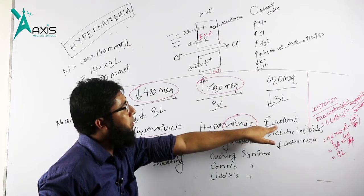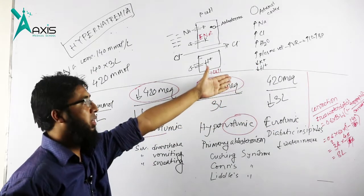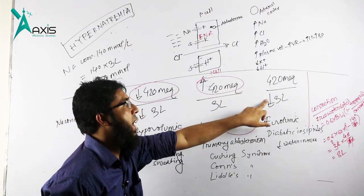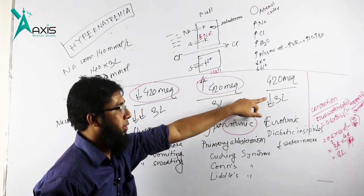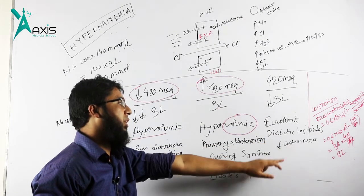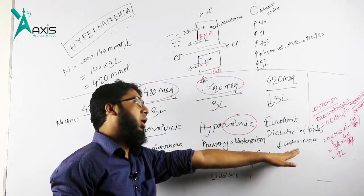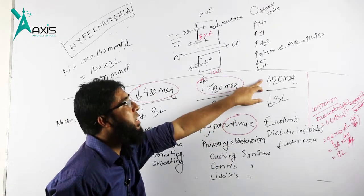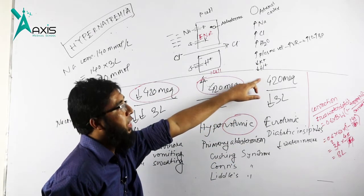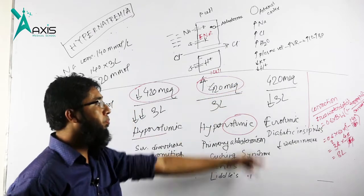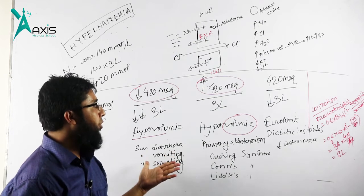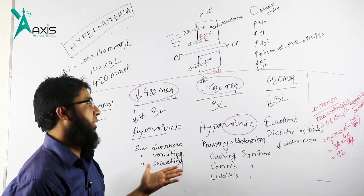Next is euvolemic hypernatremia. Euvolemic hypernatremia means sodium volume is normal, but there is absolute loss of water. Like in diabetes insipidus, decreased water intake. Plasma volume decreases, so there is hemoconcentration. Hemoconcentration means sodium increases. These are the three different types of hypernatremia.